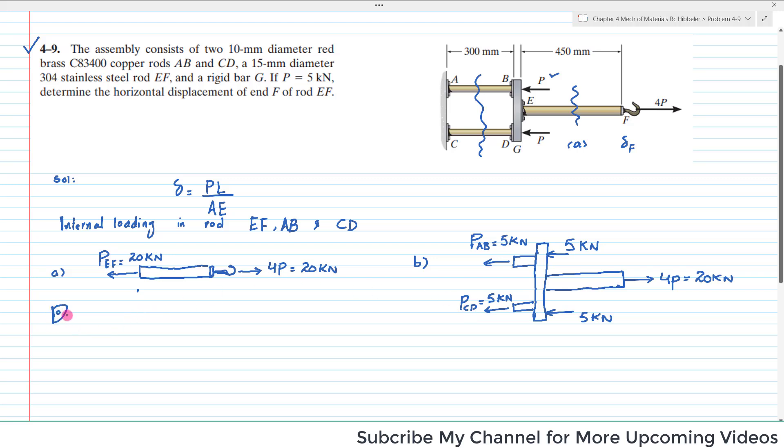Now we will move toward displacement. For displacement we have formula PL divided by AE. We have P, we have length of each rod. E will be taken from the end of the book, the table of mechanical property of materials. Area is not available, but diameters are available, so we will get the area. Area of EF equals π/4 d², and the diameter of EF is 15 mm. So this is 0.015 m squared, which equals 56.25×10⁻⁶π m².